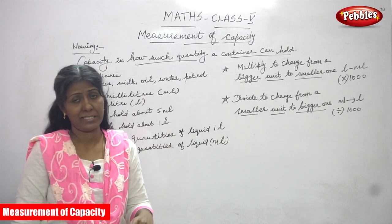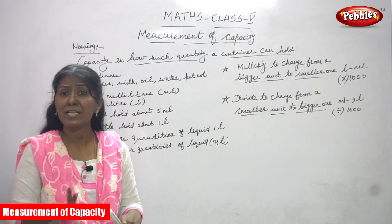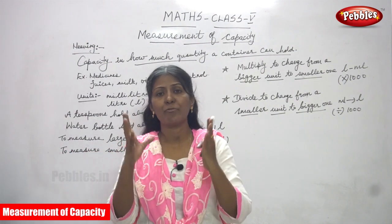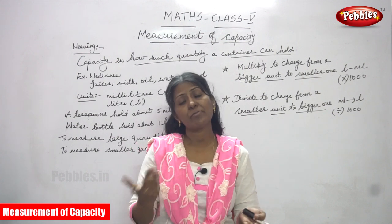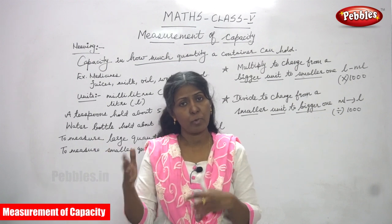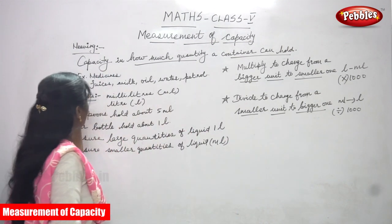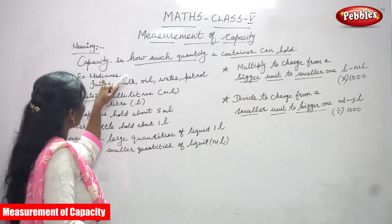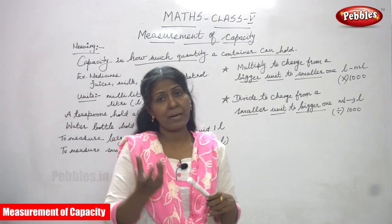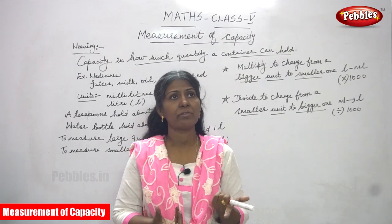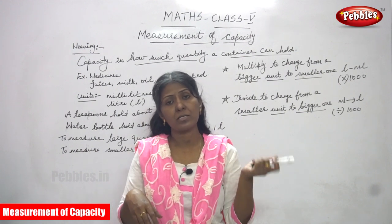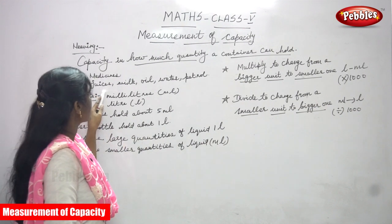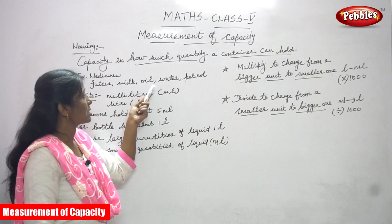From the measurement of capacity, we must first know the meaning of capacity. Capacity is how much quantity a container or vessel can hold. A small vessel and a big vessel — a big one we call a container. Examples include medicines, juices, milk, oil, water, and petrol — everything comes under liquid items. Medicines like cough syrup or digestive syrup also come under liquid, measured in milliliters. Juices come under milliliters or liters.